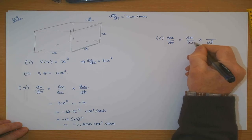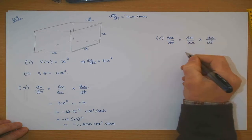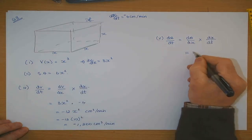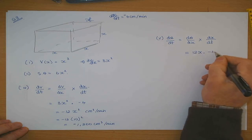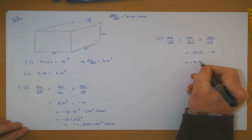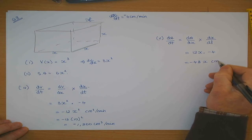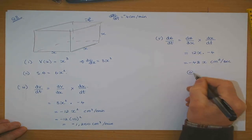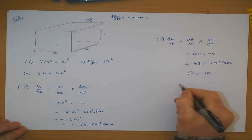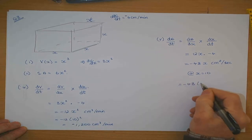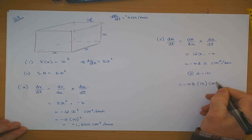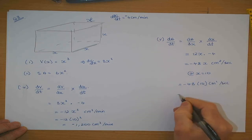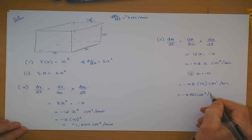dA/dx - differentiate that - is 12x times -4, which is -48x centimeters squared per minute. So at x = 10, that's equal to -48 × 10 centimeters squared per minute, which is -480 centimeters squared per minute.